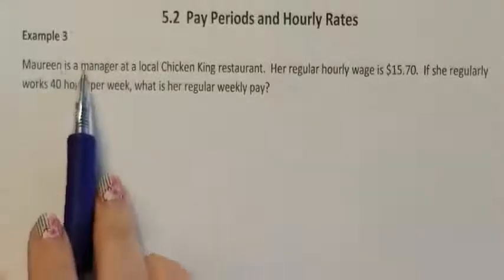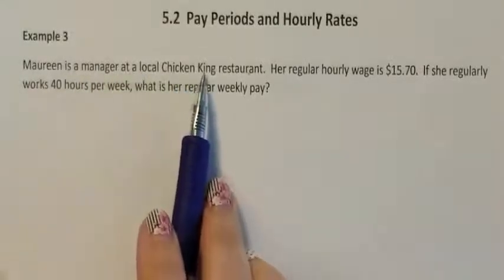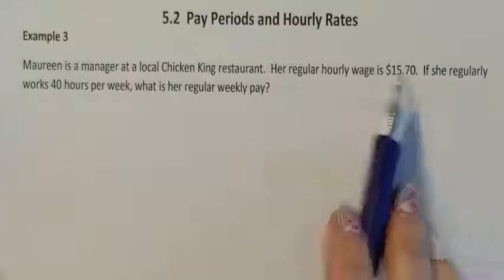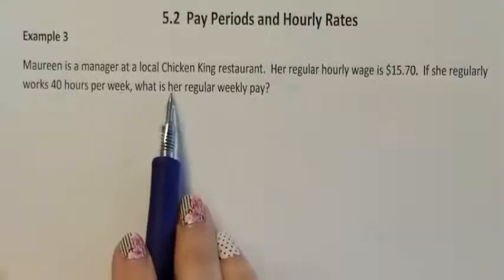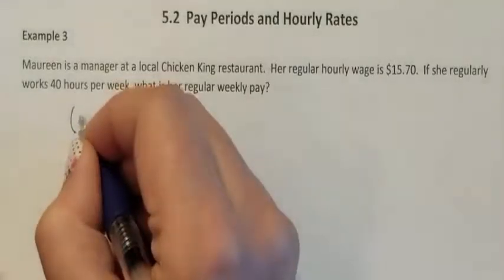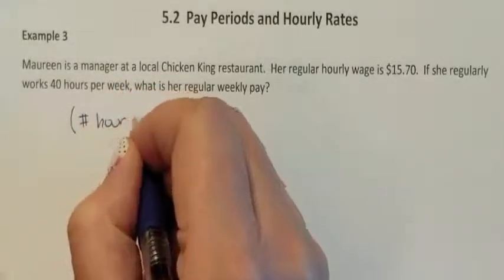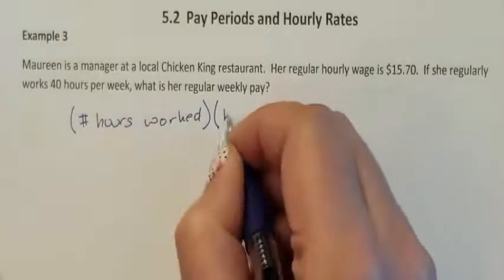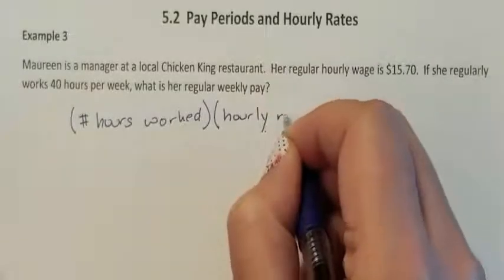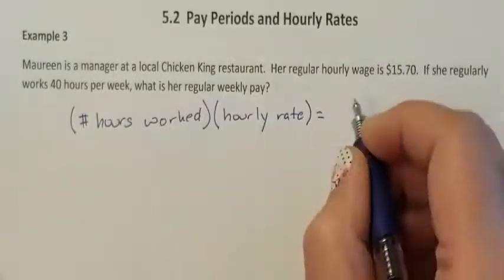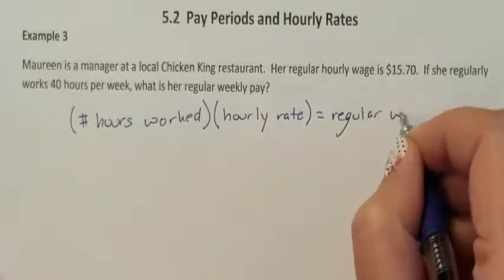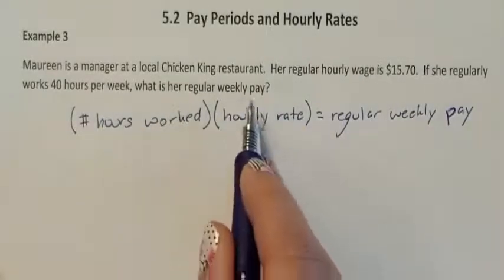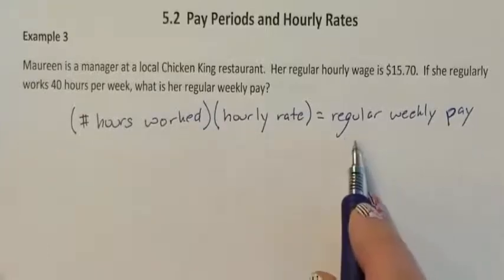Example 3. Maureen is a manager at a local Chicken King restaurant. Her regular hourly wage is $15.70. If she regularly works 40 hours per week, what is her regular weekly pay? If I know how many hours she worked and I multiply that by how much she got paid — her hourly rate — this would tell me what her regular weekly pay was.